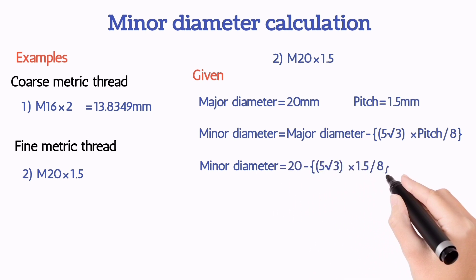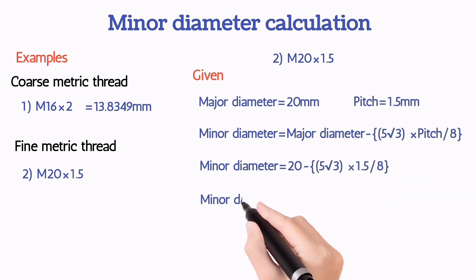After doing this calculation we got the minor diameter is equal to 18.3762mm.